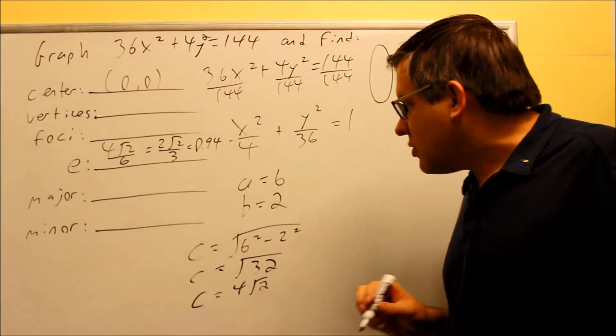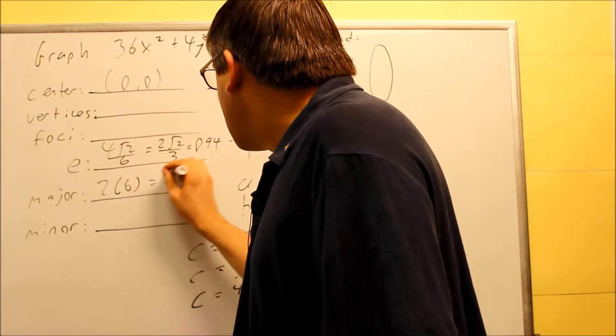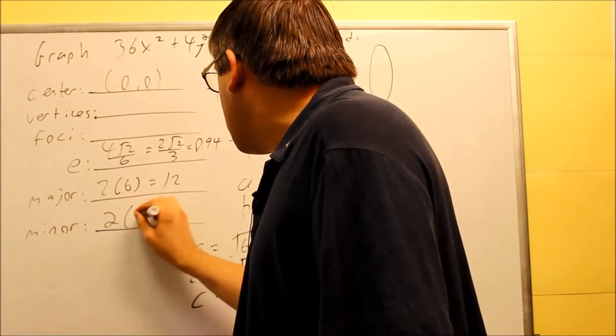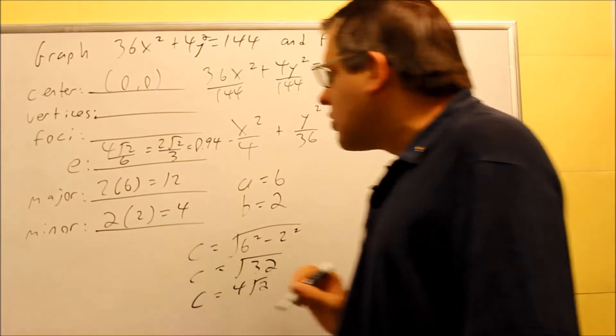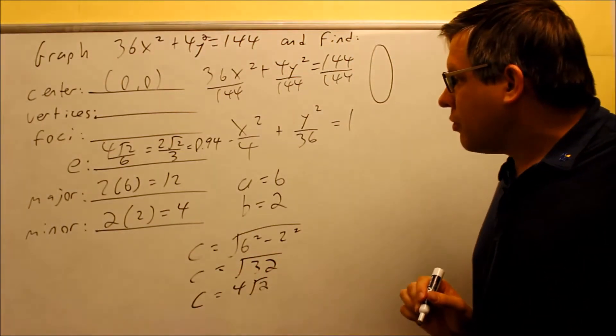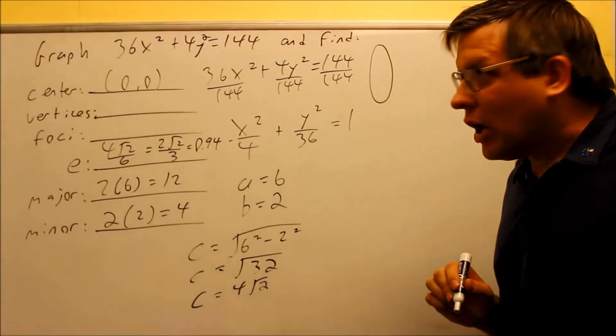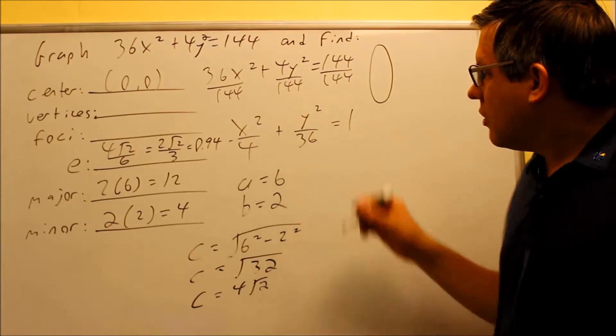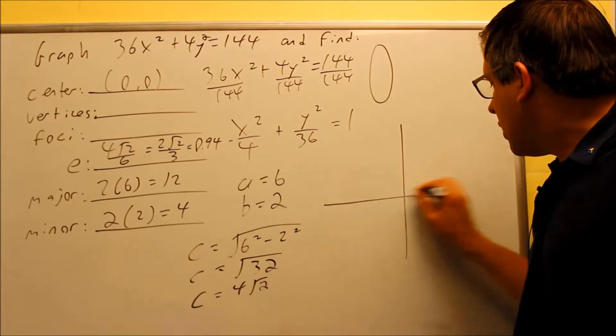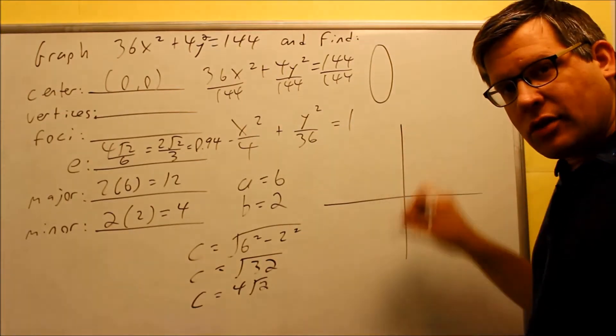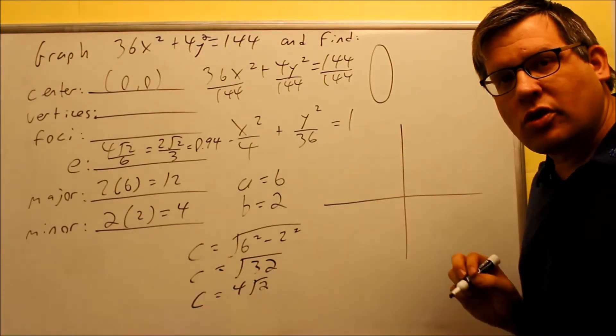Major axis, 2 times a, 2 times 6 is 12, minor 2 times b, 2 times 2 is 4. So we have that information complete. Now we're ready to do the graph. Now again, we have it centered at 0, 0, so we're going to begin with that one. We know it's going to go up and down this time because the larger number was underneath the y.